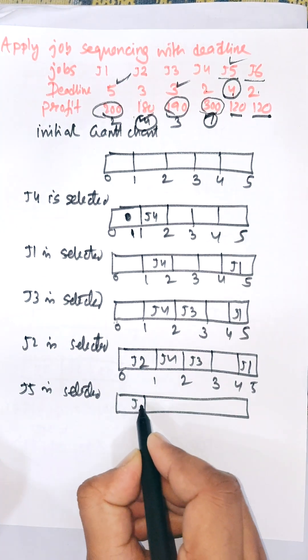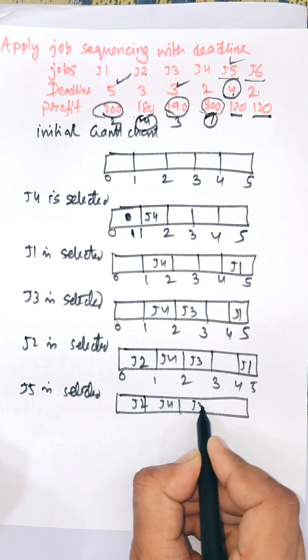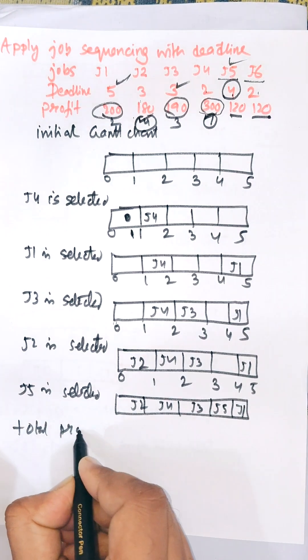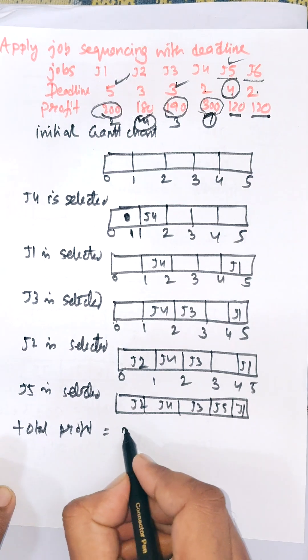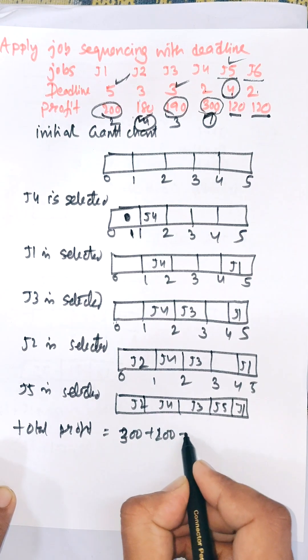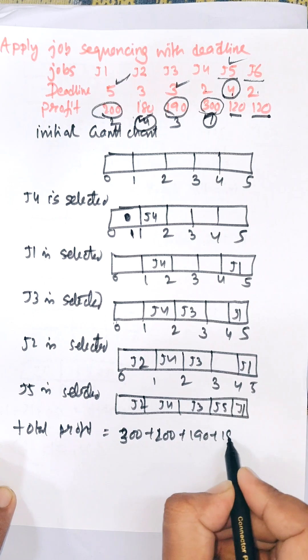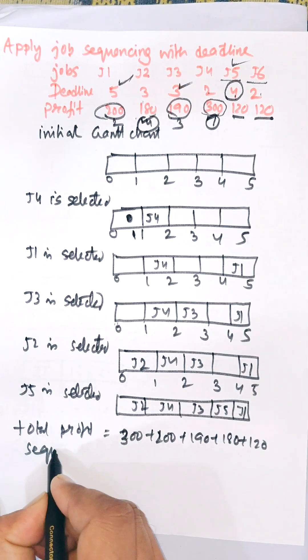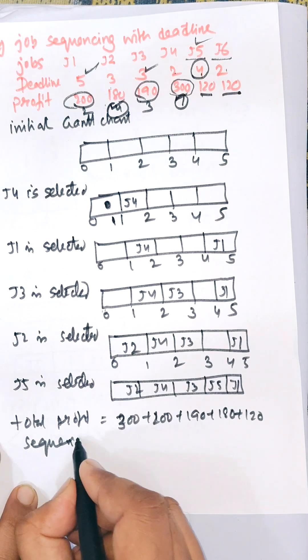J5 is selected: J2, J4, J3, J5, and J1. So total is equal to 200 plus 300 plus 200 plus 190 plus 180 plus 120. And sequence, job sequence is sequence and sequence of job: J2, J4, J4, J3, J5, and J1.